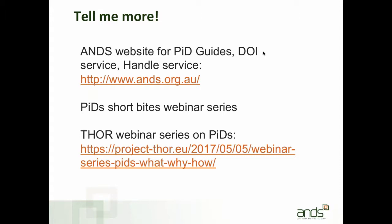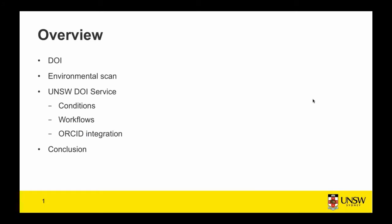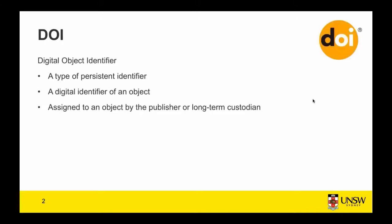I'd like to hand over now to my colleague Dr. Daniel Bangert. Thank you Natasha. Today I'll be talking through a service that we implemented at UNSW Library to support the citation of grey literature held in our repositories. This is based on a presentation I gave late last year for the CARL Research Repositories Community Days - the slides and video can be found at the link on screen. I'll briefly cover digital object identifiers, the environmental scan we did to design our service, details of the UNSW DOI service including conditions around DOI assignment, workflows, integration with ORCID identifiers, and a conclusion.